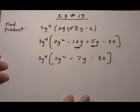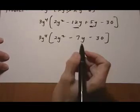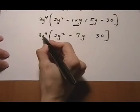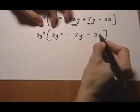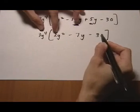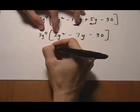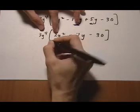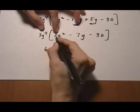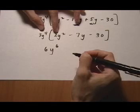Now we're at the step where we want to go ahead and distribute the monomial through here. So 3y to the 4th multiplies every single term. So 3y to the 4th times 2y squared gives us 6y. And then add the exponents because we're multiplying same bases. So we get 6y to the 6th.